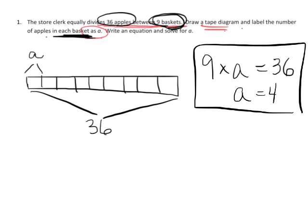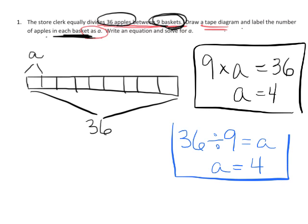Now that's one way we could have written the equation and solved it. Another way we could have written it is we could have said 36 divided by 9 equals A. And then, in this case, A is equal to 4. So we had two ways that we could have written the equation for this problem. But in both cases, the answer is going to be A is equal to 4.